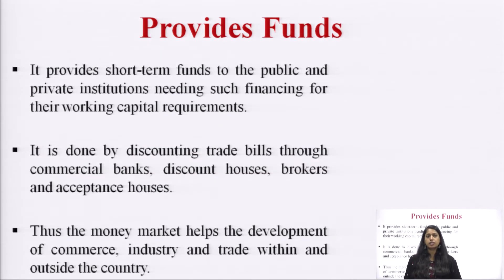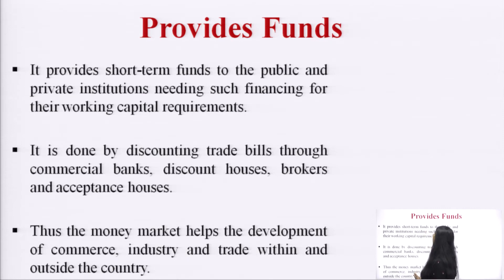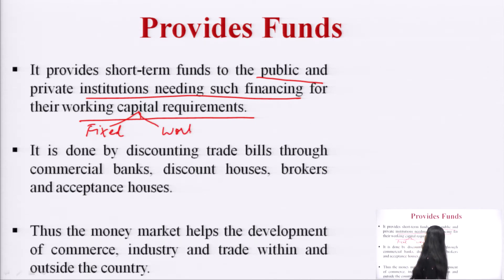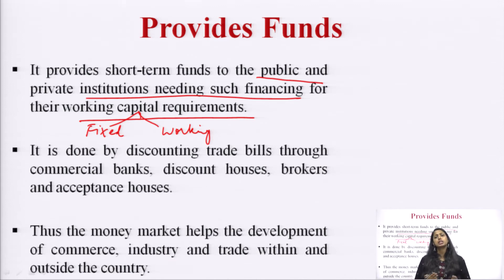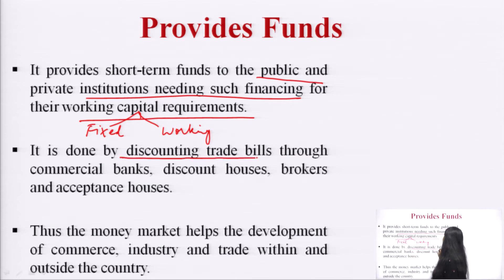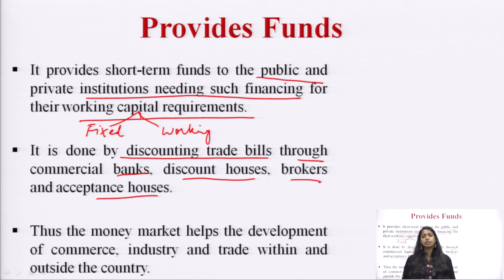The first function is providing funds. The money market provides short-term funds to public and private institutions for their working capital requirements. There are two types of capital: fixed capital, which is needed for long-term asset purposes, and working capital, which is needed for day-to-day operations. When you need money for daily operations, you go to the money market for short-term funds without paying a long-term rate of return.